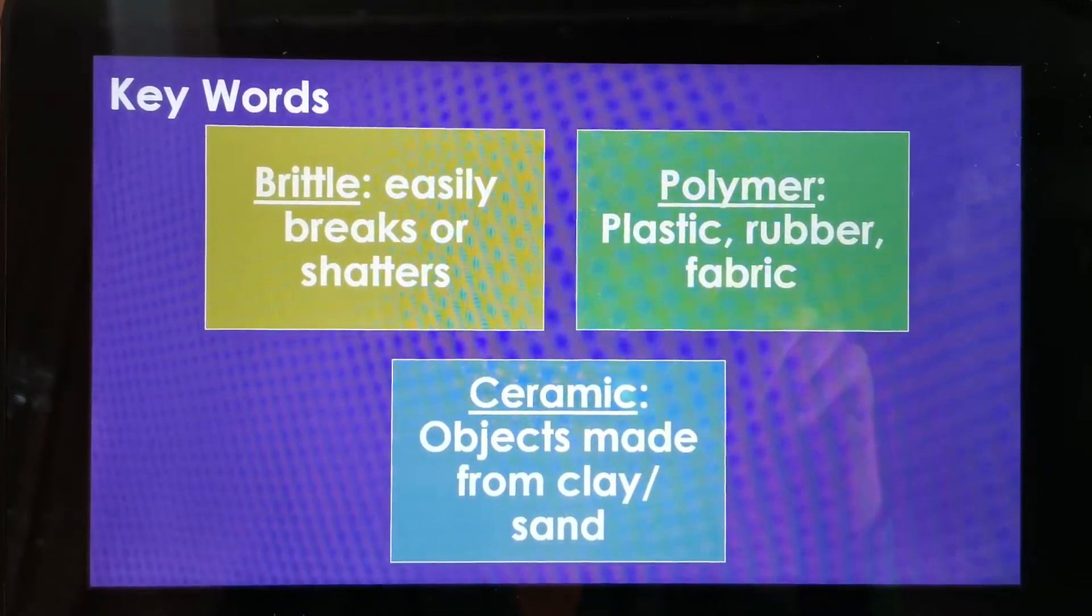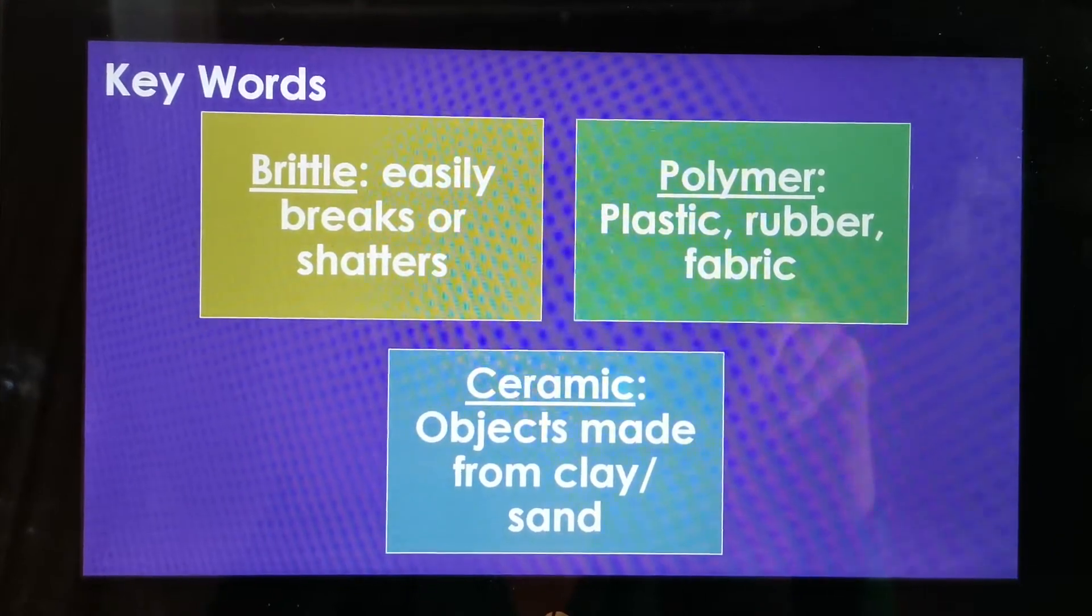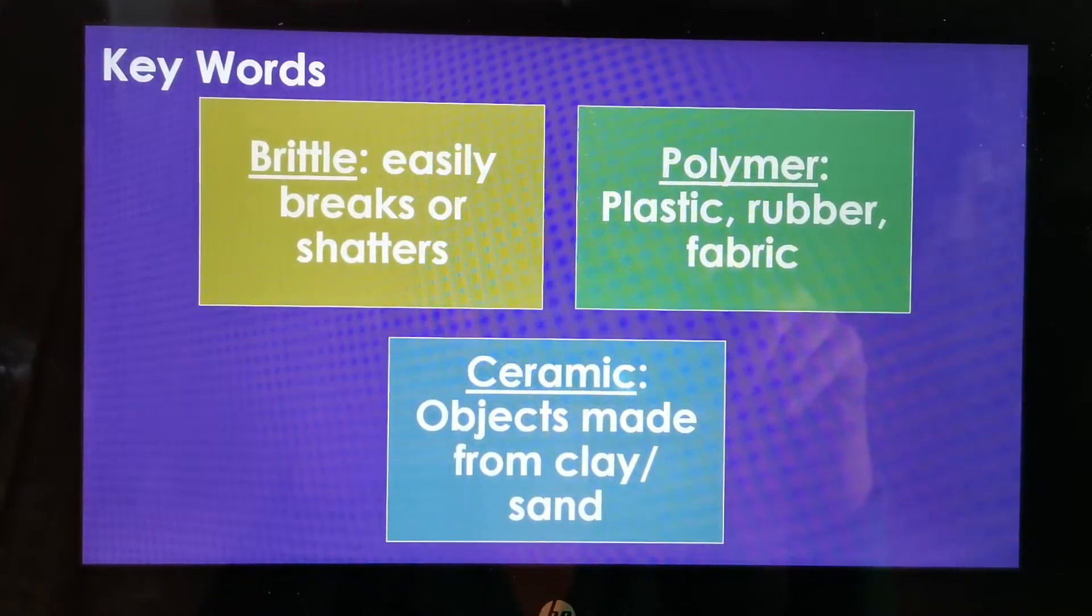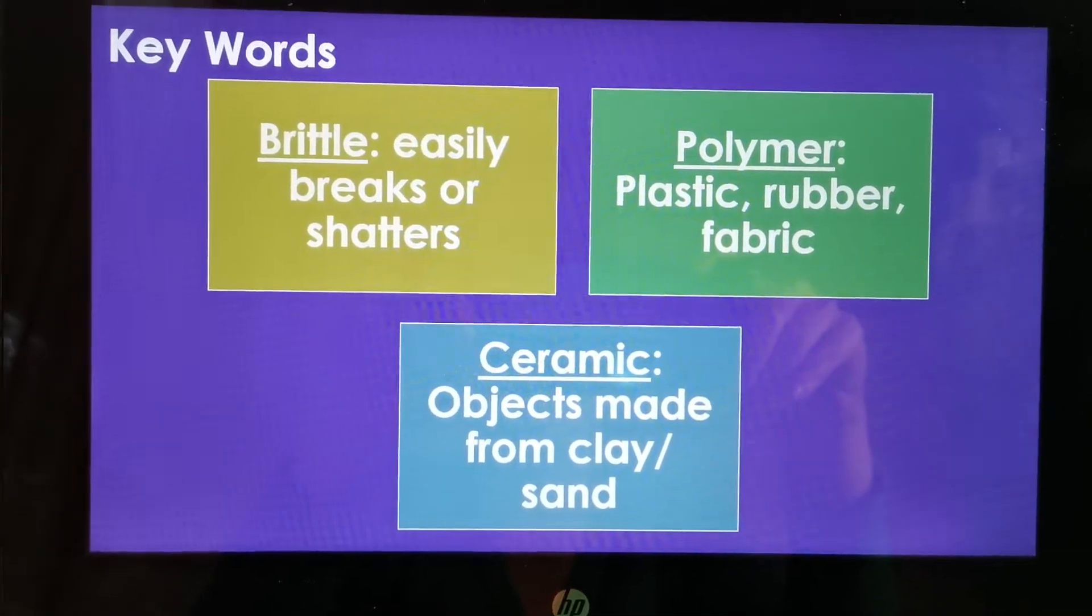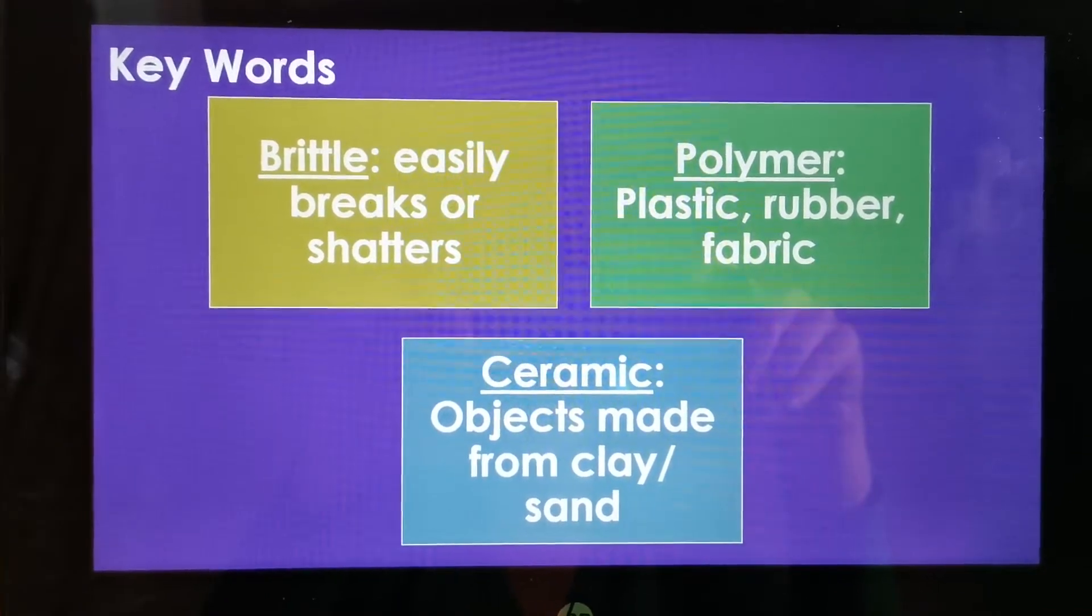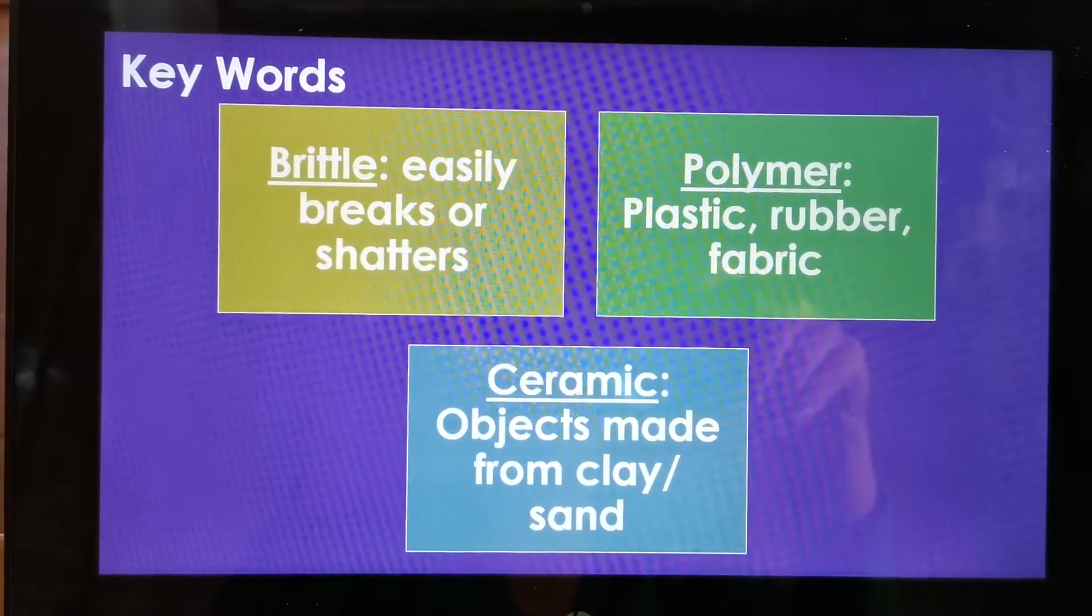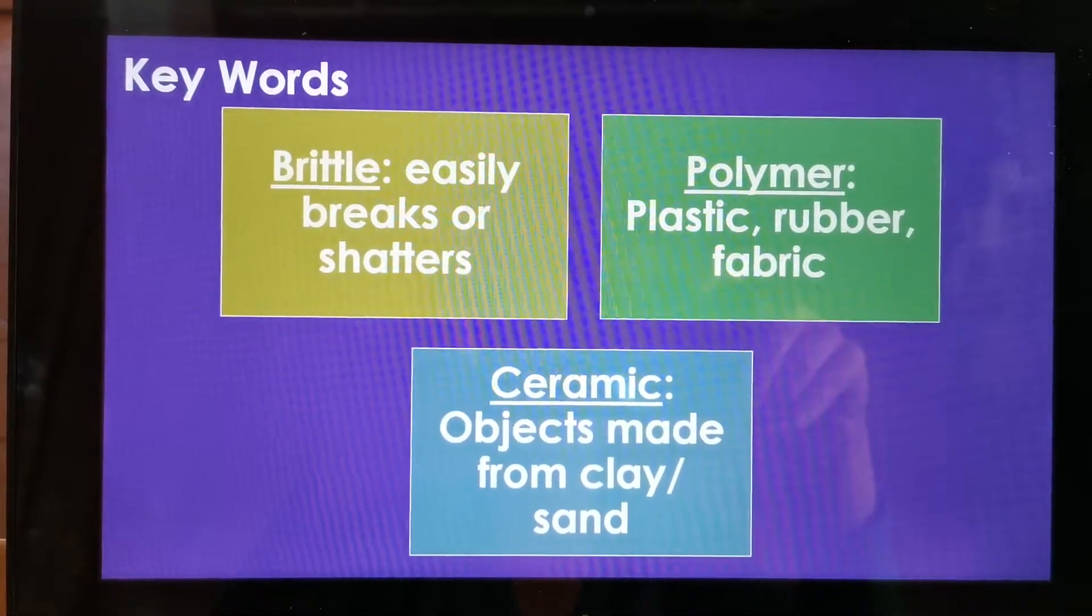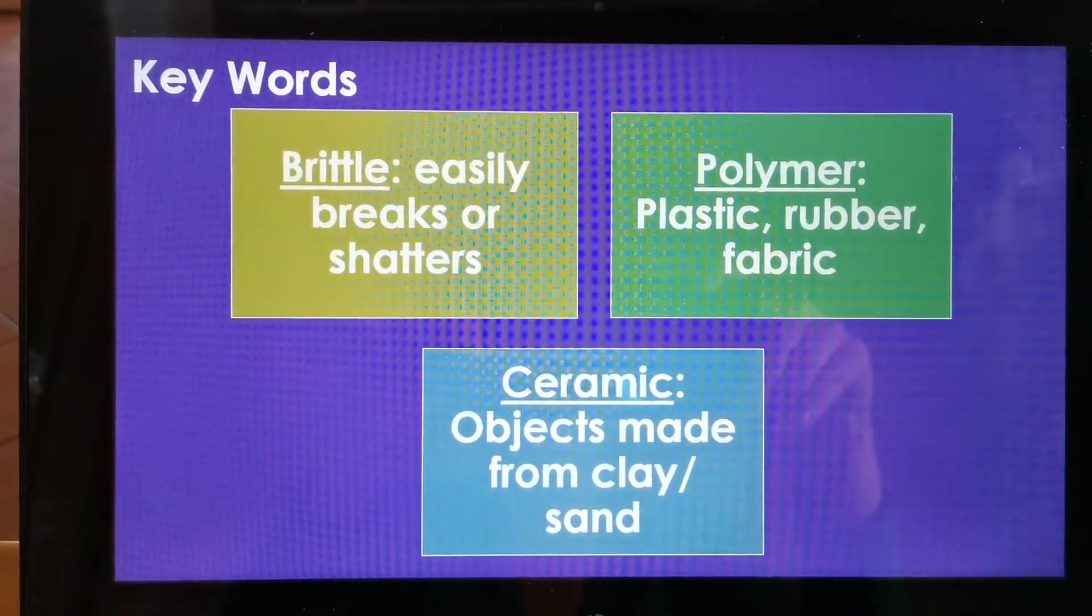Polymer. Polymer is anything made out of plastic, rubber, or fabric. That is your polymers. And then we have Ceramics. Ceramics, they are the objects made from clay or sand. Did you know that your toilet is made out of clay and sand? Because your toilet is a ceramic. And your basin and your bath. And then you also have your mugs and you have your plates. That is your ceramics.